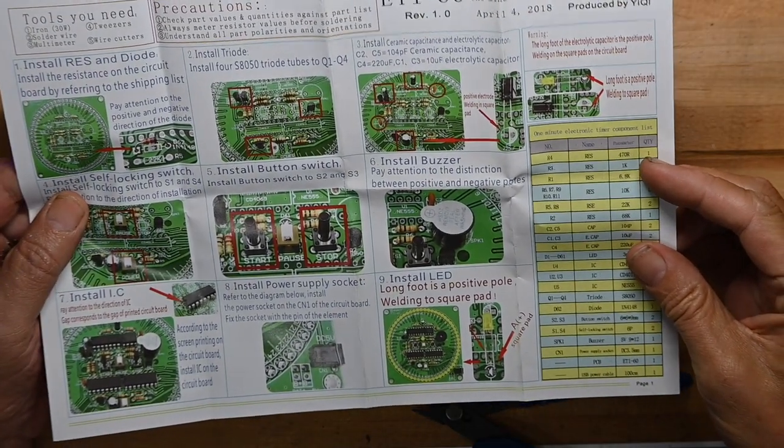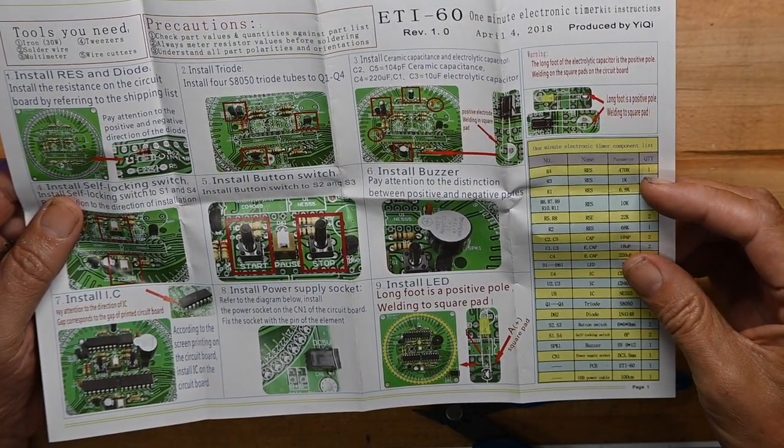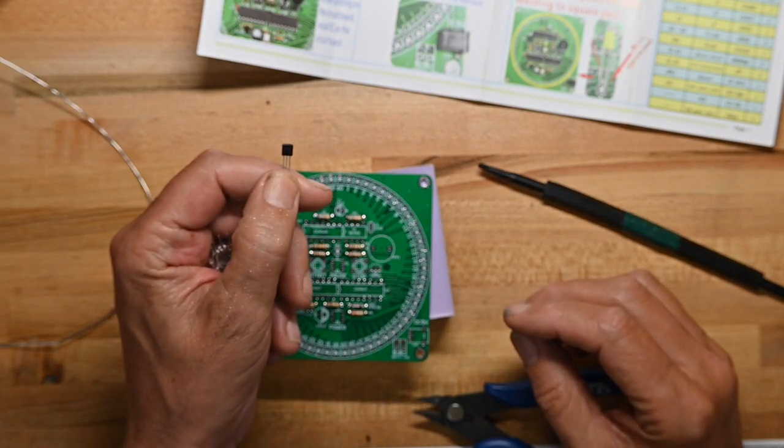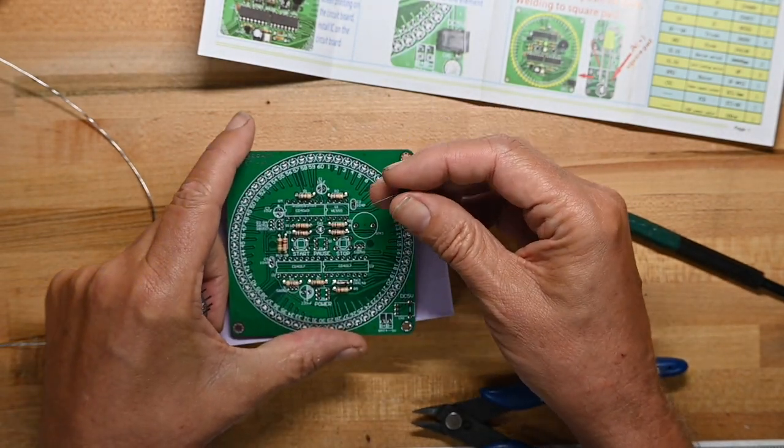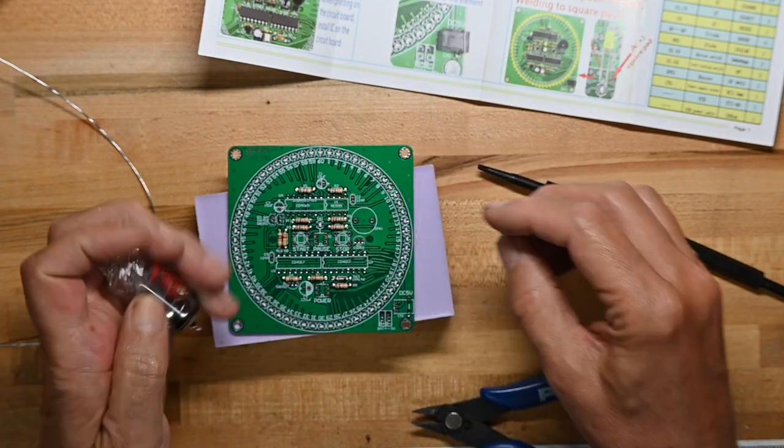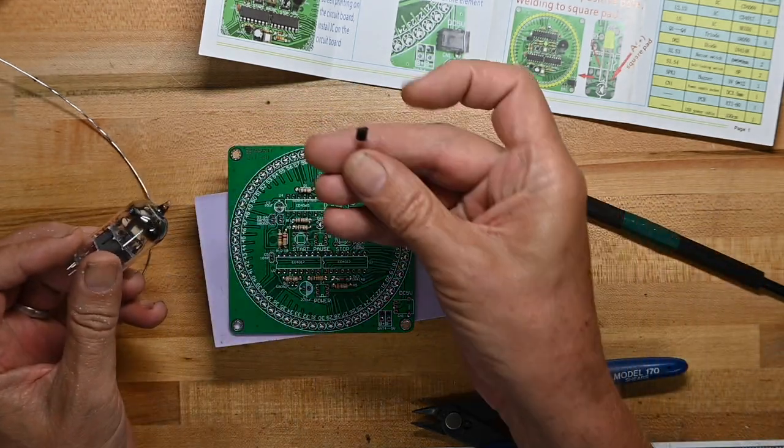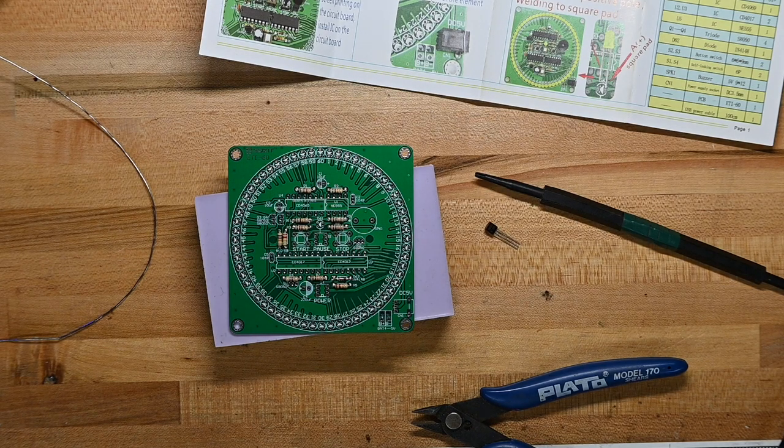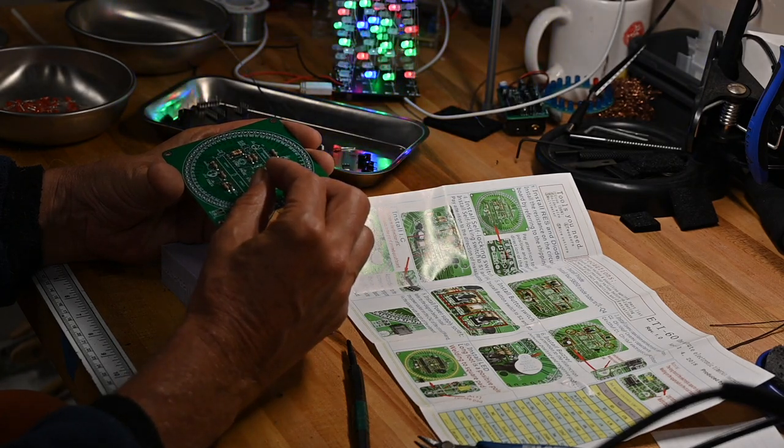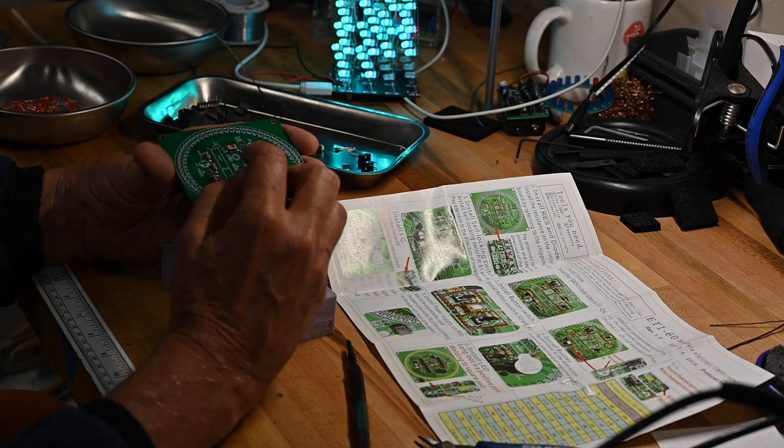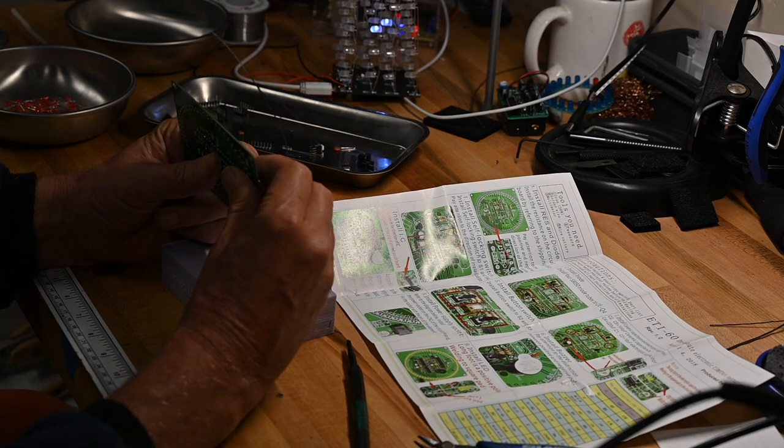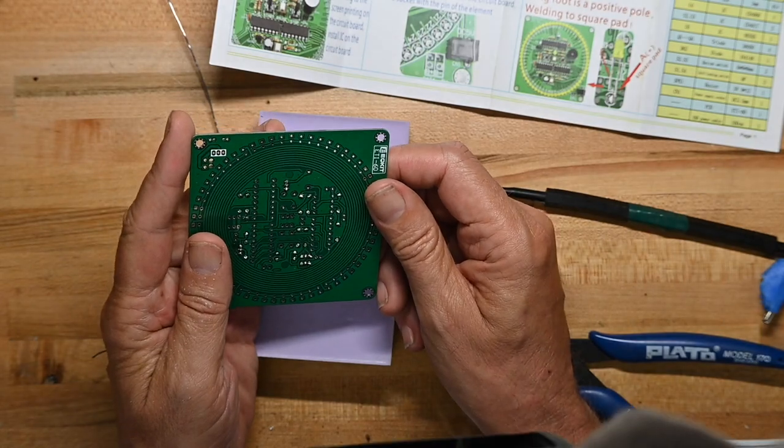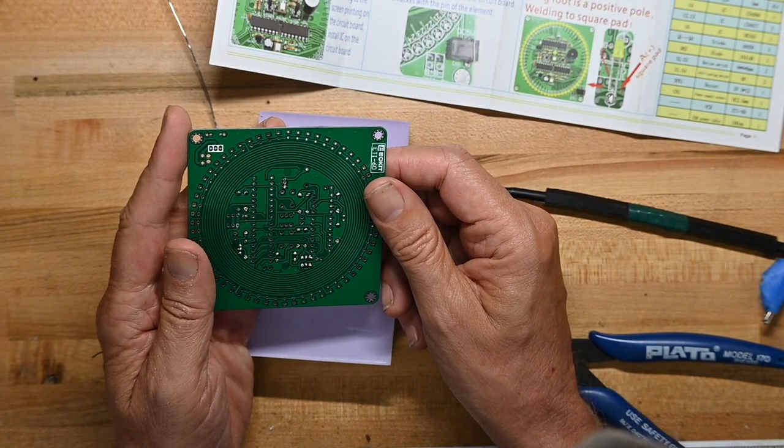Step two is install the four S8050 triode tubes to Q1 through Q4. So what they are calling triode tubes is what we call transistors, because this is neither a triode nor a tube. This is a triode. This is a transistor. While they work somewhat similarly, they are definitely not the same. These are inline, so you're not bending one leg back or forward. And it's very clear which end the flat side goes on. And I'm just double checking to make sure I didn't bridge anything, and I did not.